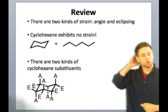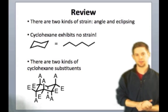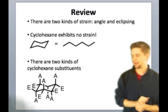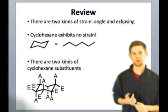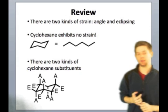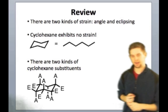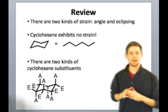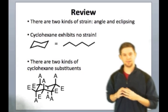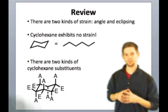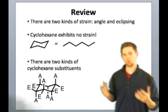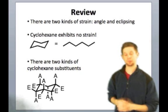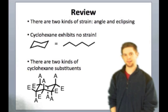Last time, we looked at ring strain in the small cycloalkanes. We looked at the two kinds of ring strain: angle and eclipsing strain. Angle strain, common in, for instance, the cyclopropanes, has to do with the fact that bond angles in the small rings are non-ideal. So they're very far from the 109.5 degrees that we would like for the cycloalkanes to have.